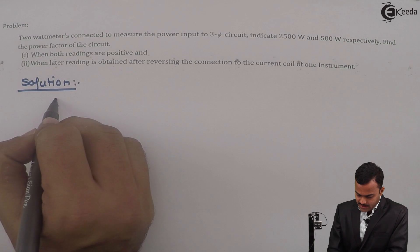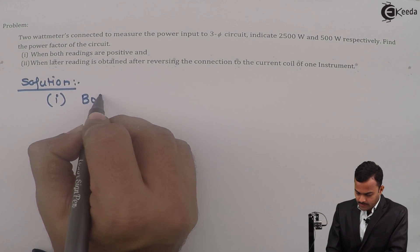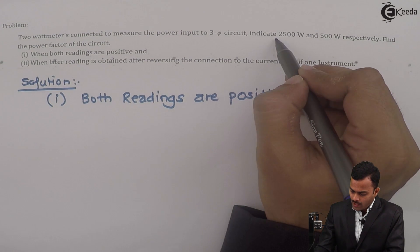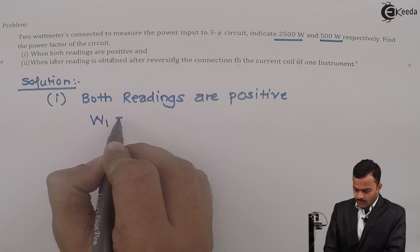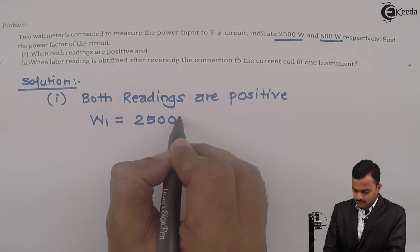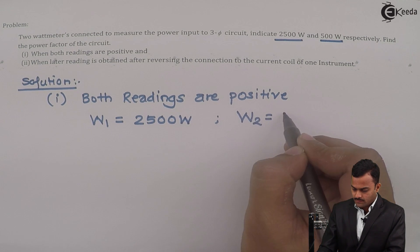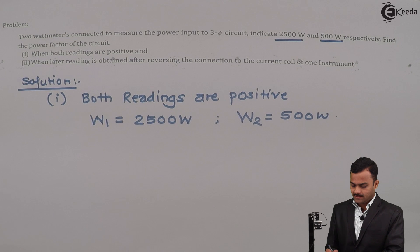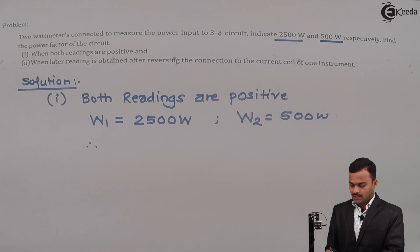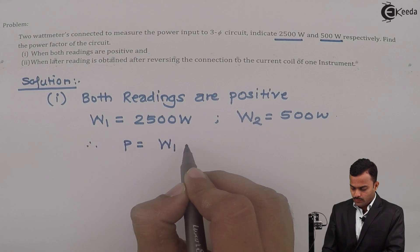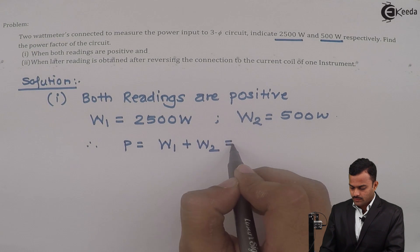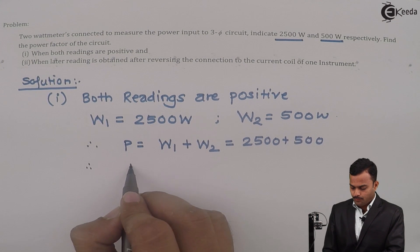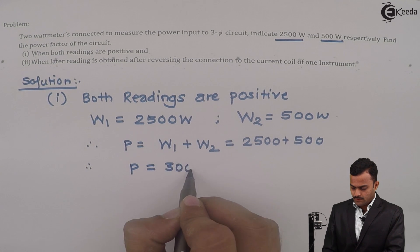I will consider the first condition is both readings are positive. Here they are given two wattmeter readings, so W1 is 2500 watts and W2 is 500 watts. Whenever we know the wattmeter readings, we can get total power P, which is just addition of W1 and W2. So this is equal to 2500 plus 500, so the power consumed is 3000 watts.